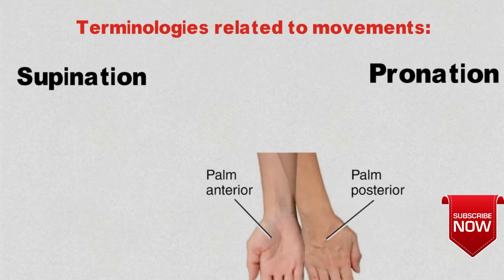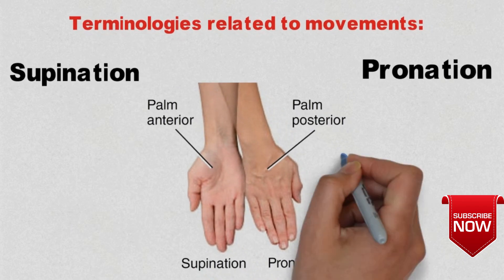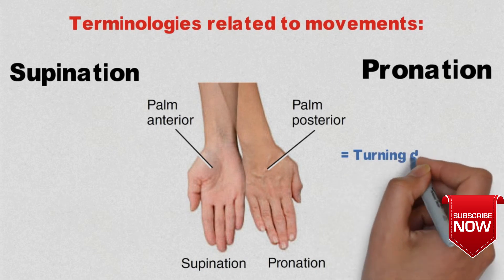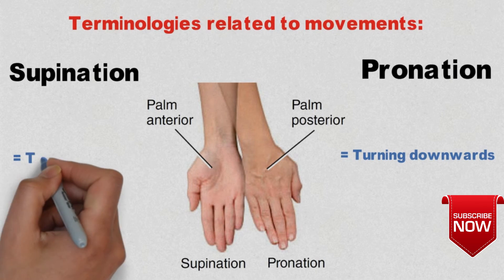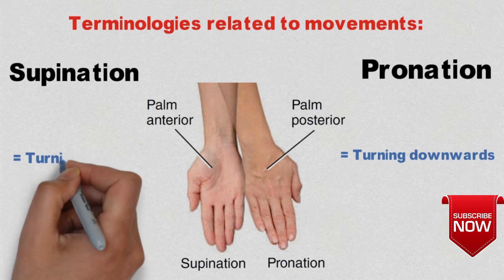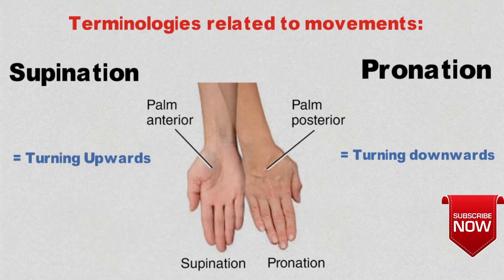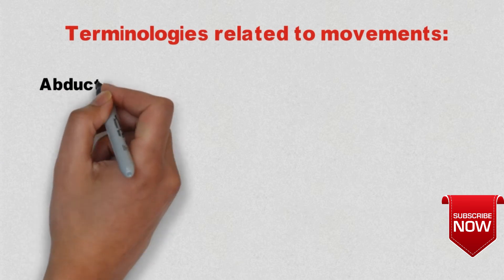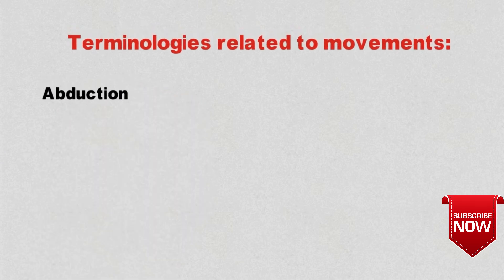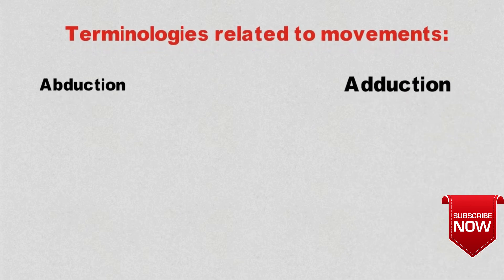Moving to the next terminology: pronation and supination. In the diagram, the palm facing anterior is supination and the palm facing posterior is pronation. Pronation refers to turning downwards and supination refers to turning upwards. Next we have abduction and adduction.